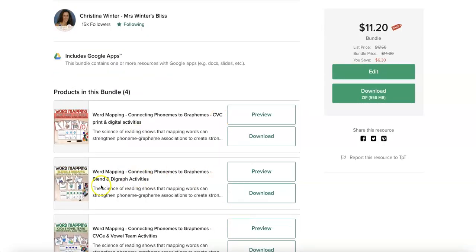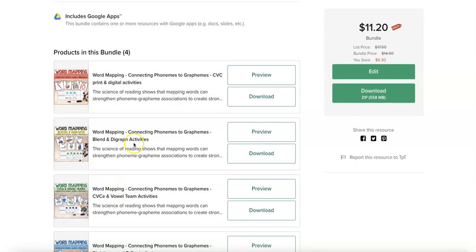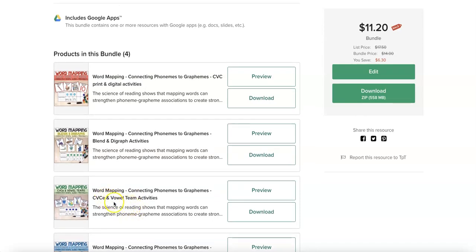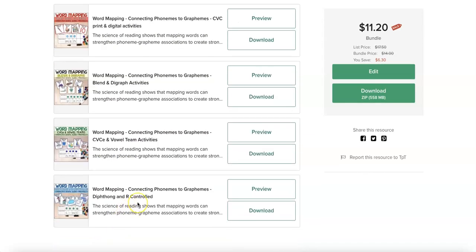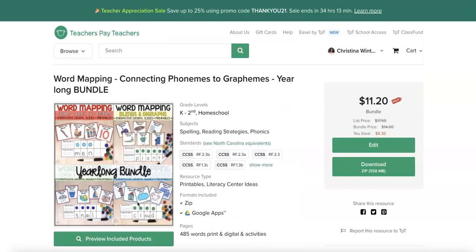The first unit would be CVC words, blend and digraph, and CVCE and VALTEAM and then diphthong and R controlled words. So let's take a look.